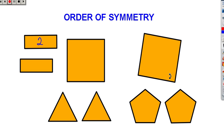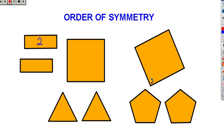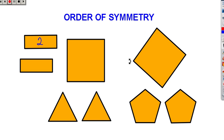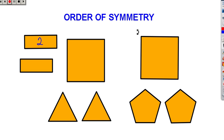And then I come around a little bit more. That's two, three, and then back to the beginning, four. And so the order of symmetry for this square is the number four.